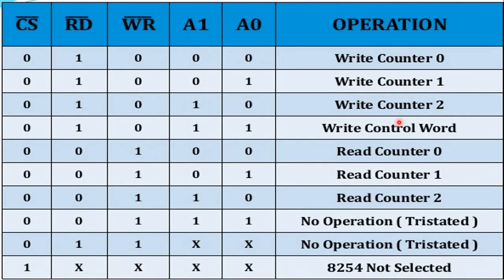Regarding read/write control logic: when the chip select signal is active low, the 8254 is selected for operation; if it goes high, the 8254 is not selected. The read signal is also active low — if high, there is no read operation. The write signal is also active low — if low, write operation occurs; if high, there is no write operation.